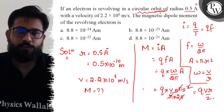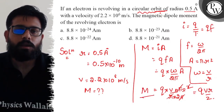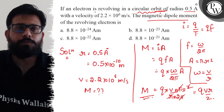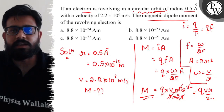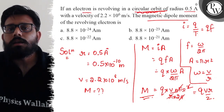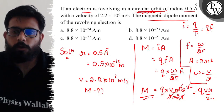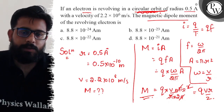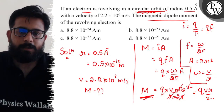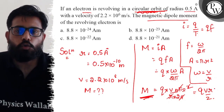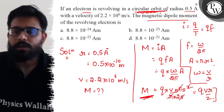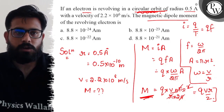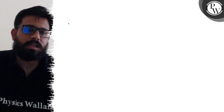So the value of magnetic dipole moment for an electron revolving in a circular orbit is M = QVR / 2. This is the standard formula for the magnetic dipole moment of a revolving electron.